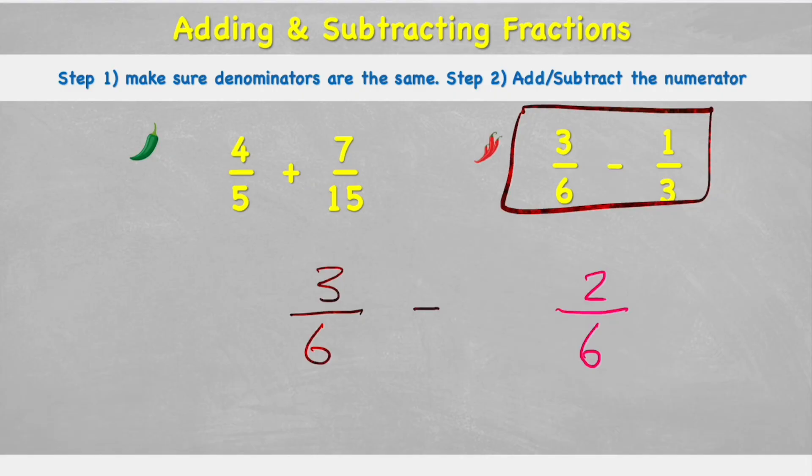So now I can get rid of this original part. And my question now reads three sixths subtract two sixths. So looking at my question, all I need to do is add or subtract the numerator. So all I need to do is do three subtract two, which equals one. And we're always working in sixths. So I'm going to still have six at the end. So my answer is one sixth.